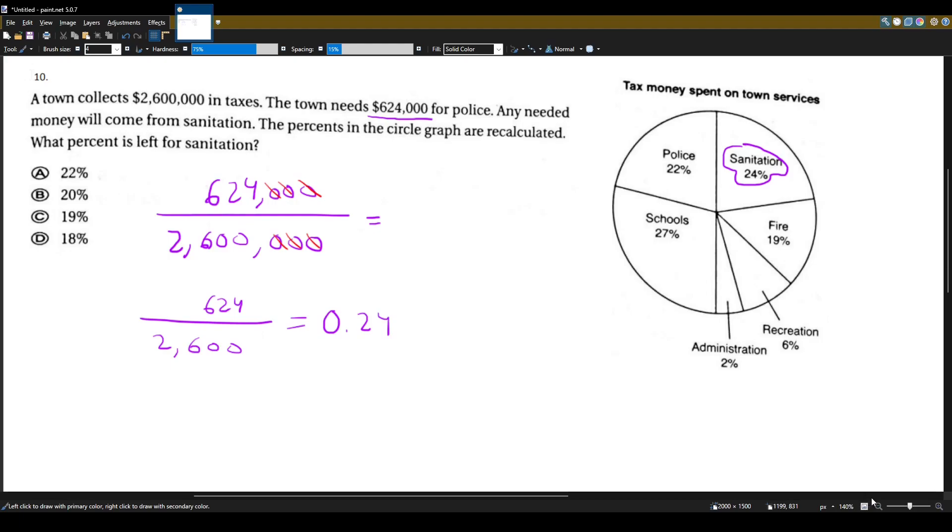And remember, to go from decimal to percent, we'll just take the decimal place and move two places to the right. One, two. So instead of 0.24, we can say it's 24%. So the police get 24%.